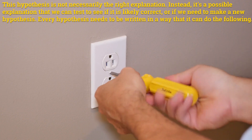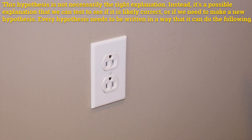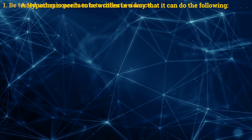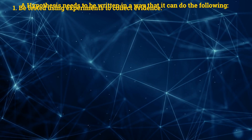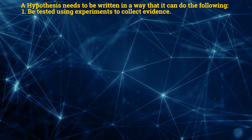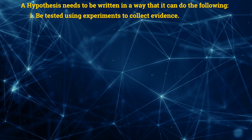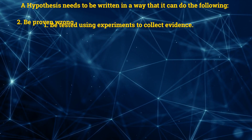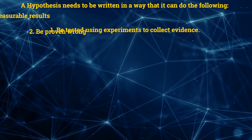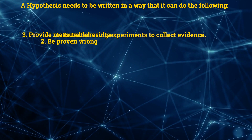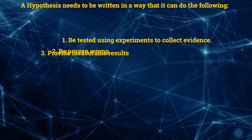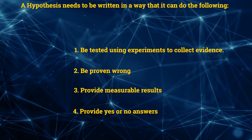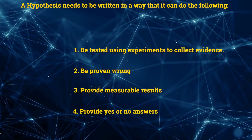Every hypothesis needs to be written in a way that it can do the following: Number 1, be tested using experiments to collect evidence. Number 2, be proven wrong. Number 3, provide measurable results. And number 4, provide yes or no answers.